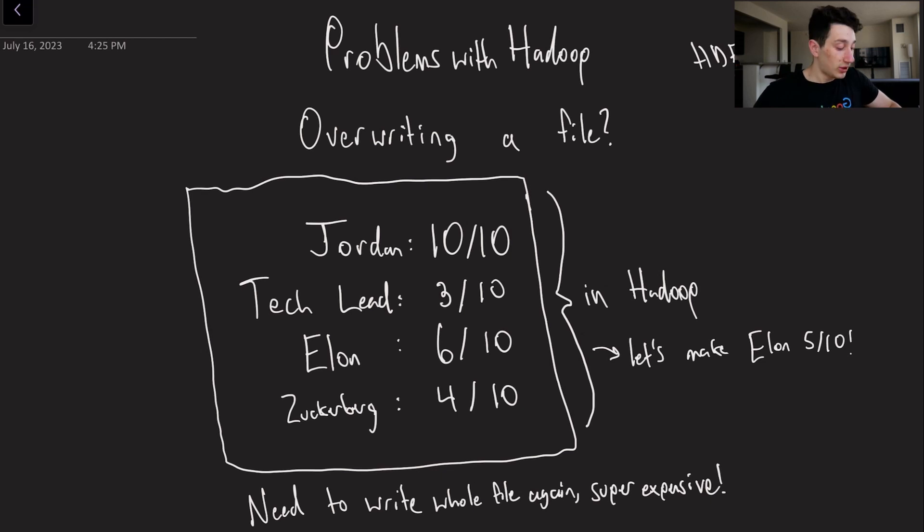But the issue with it is something that we're going to talk about, which is that when we actually have a file stored and we want to make a modification to it, it's very inefficient. So here's an example of a file right here in Hadoop and as you can see we've got some information. Let's think of this as a key value store where we've got all of our attractiveness levels of some common characters that we're all familiar with. As you can see, Jordan 10 out of 10 as expected.